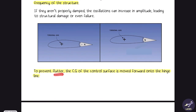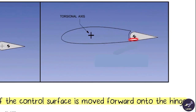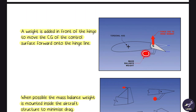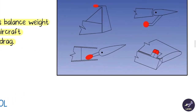To prevent flutter, the CG of the control surface is moved forward onto the hinge line. To do this, a weight is added in front of the hinge line so that the CG of the control surface moves forward. When possible, the mass balance weight is mounted inside the aircraft structure to minimize drag.